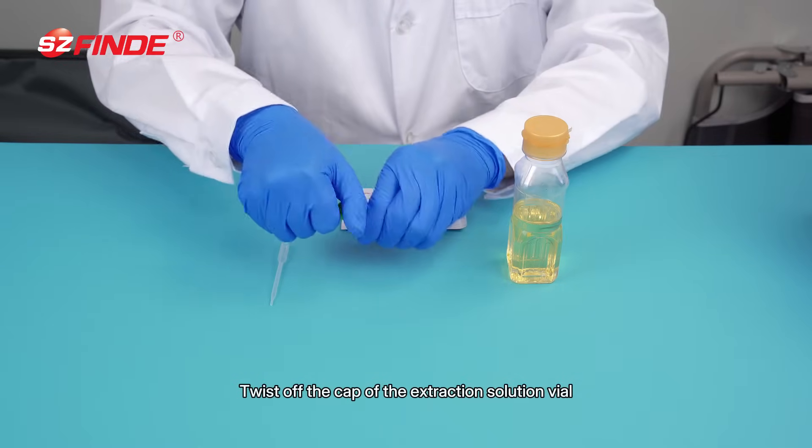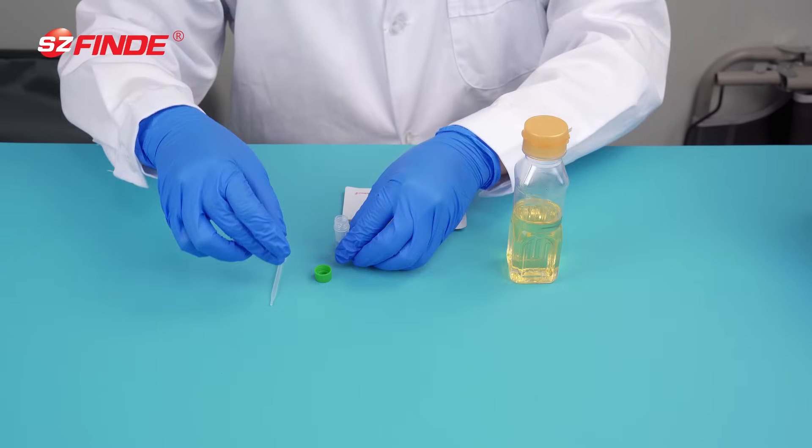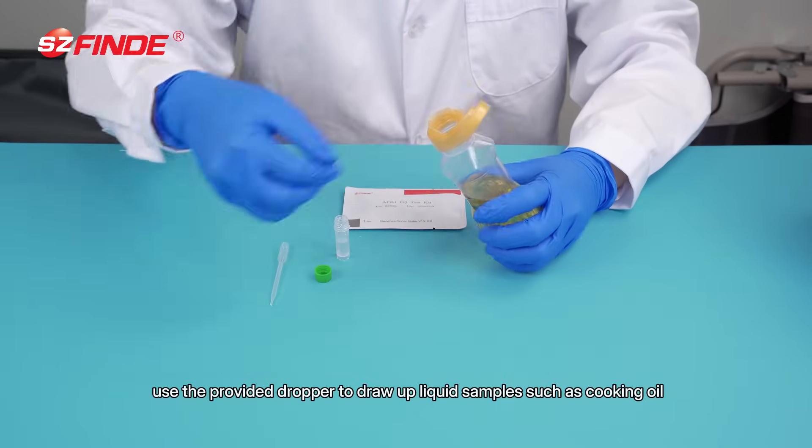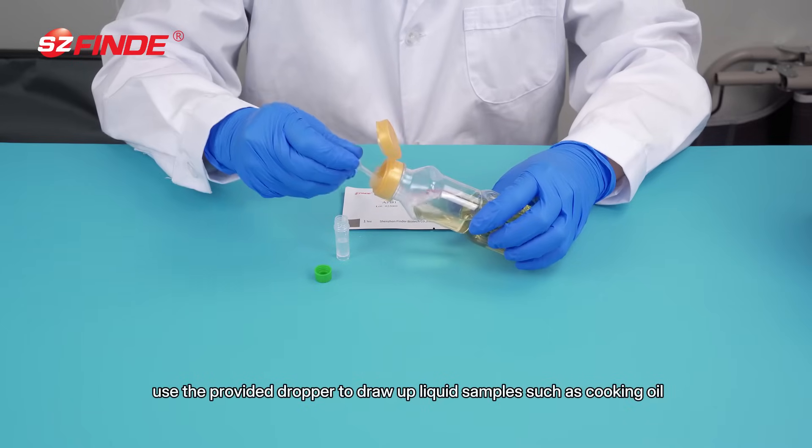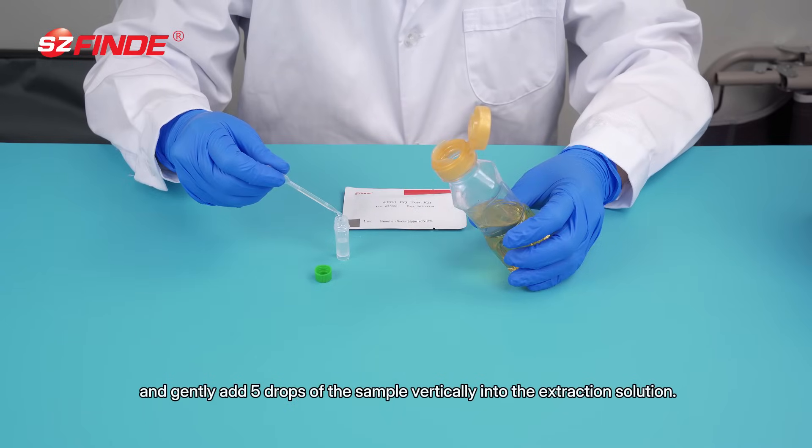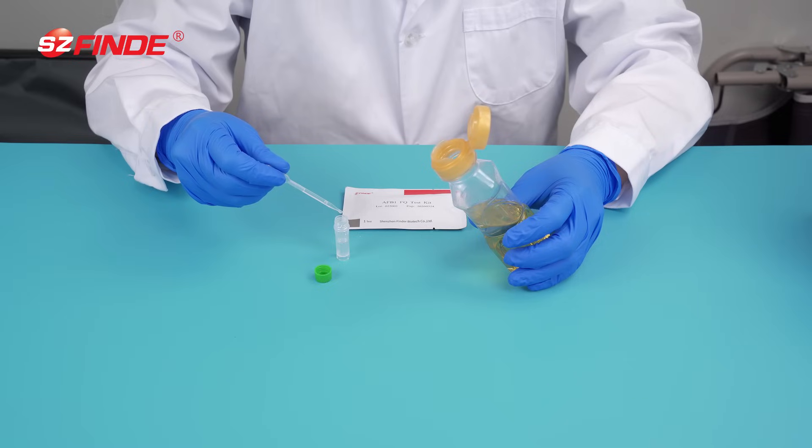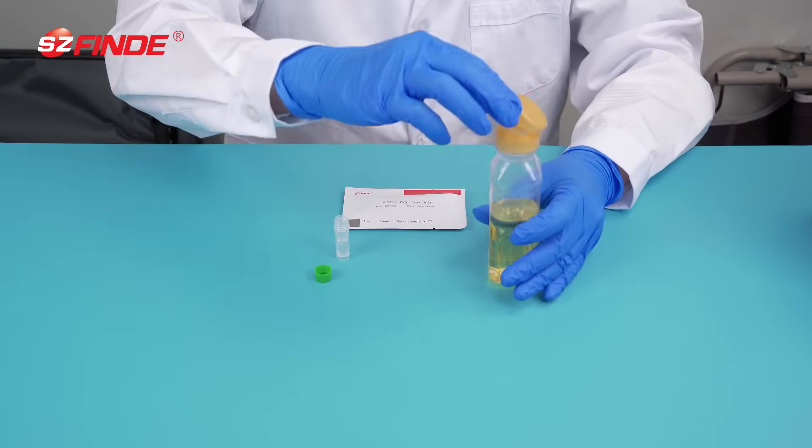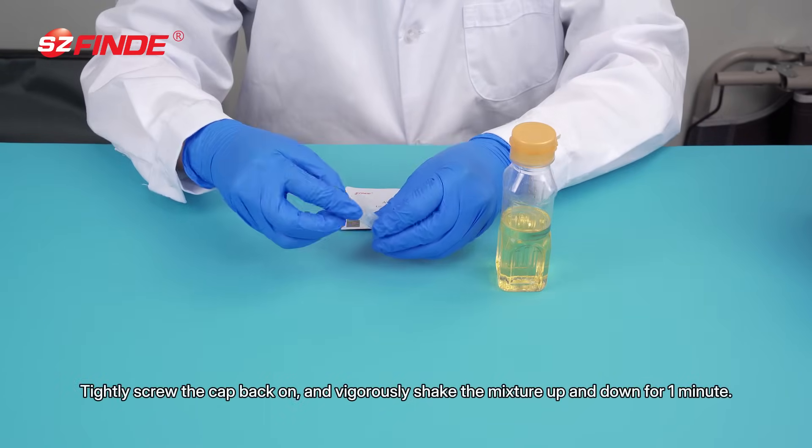Twist off the cap of the extraction solution vial. Use the provided dropper to draw up liquid samples such as cooking oil and gently add five drops of the sample vertically into the extraction solution. Tightly screw the cap back on.